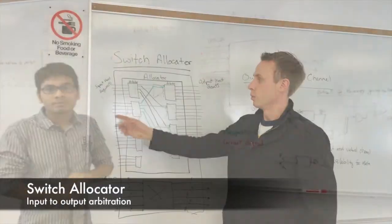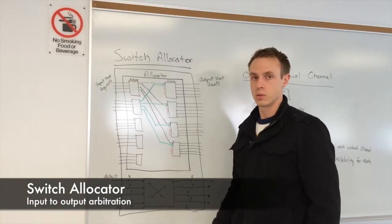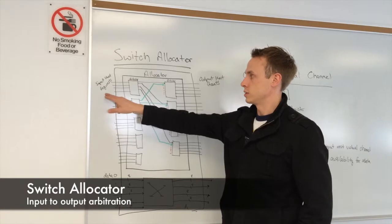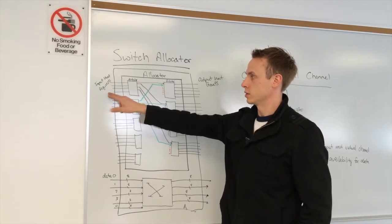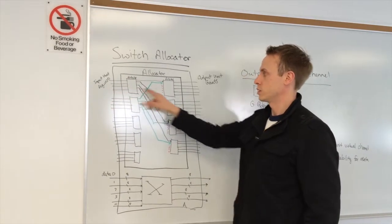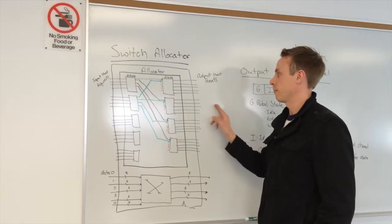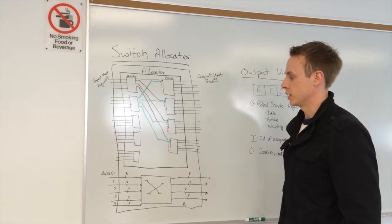When an input unit needs to traverse the router, it actually passes the information from the virtual channels, requests the arbitration, and based on the grant signals from the switch allocator,